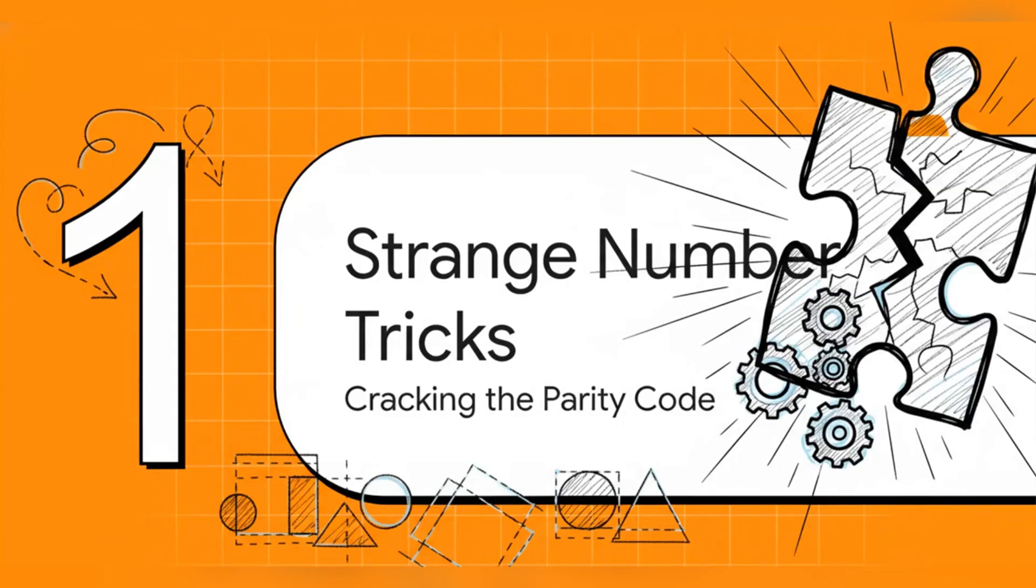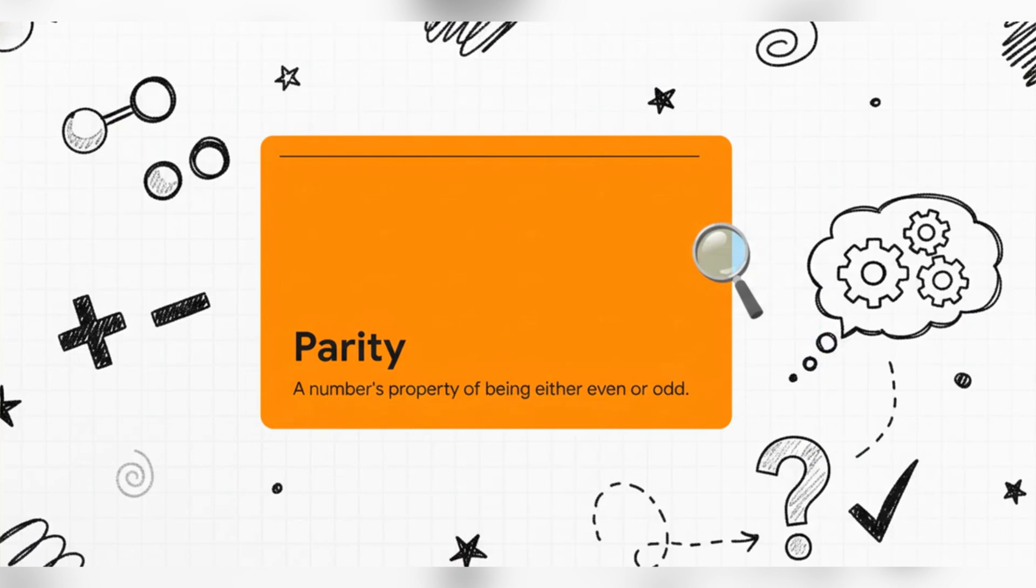All right, let's start with that first puzzle, the one with the four numbers in a row. The solution really just boils down to one simple but really powerful idea, and that idea is called parity. Now it sounds fancy, but it's just a word for whether a number is even or odd. That's it. So what our little puzzle is telling us is that no matter what we do with pluses and minuses, the answer always has an even parity. So let's figure out why.